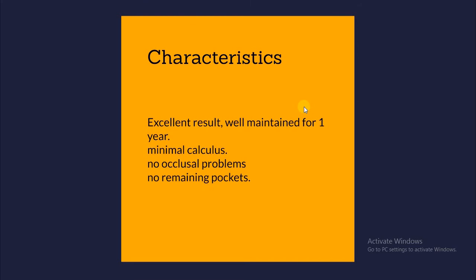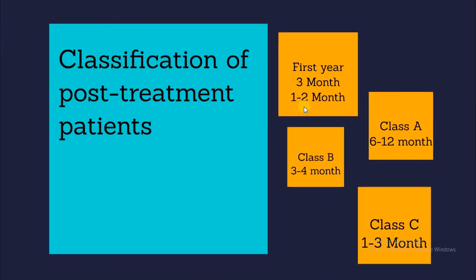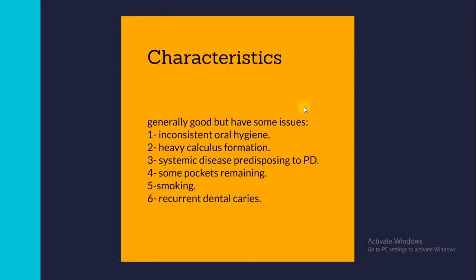In Class B, which needs three to four months recall, these patients are generally good but have some issues like inconsistent oral hygiene, heavy calculus formation, systemic disease predisposing to periodontal disease, some remaining pockets, smoking, recurrent dental caries, and some teeth with less than 50% alveolar bone support. There may also be ill-fitted prosthesis and plaque-retentive factors. These problems may aggravate, so shorter intervals of three to four months are needed.